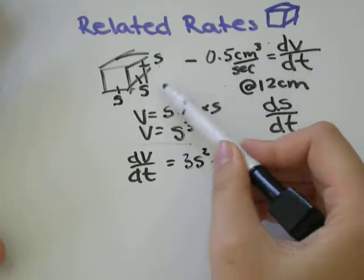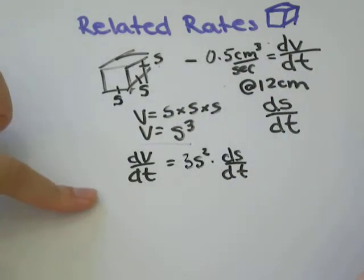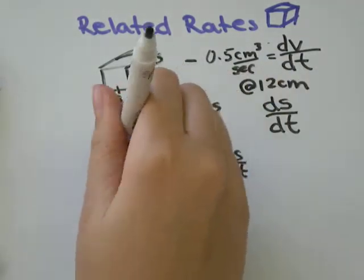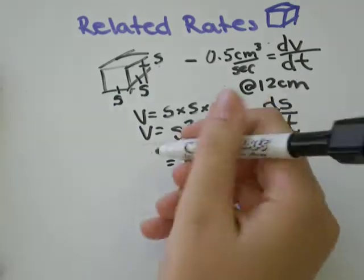So now all I need to do is plug in some of this information for my variables. So, dV dt, we said that was negative 0.5 cubic centimeters per second.